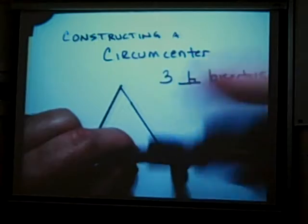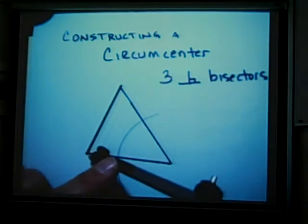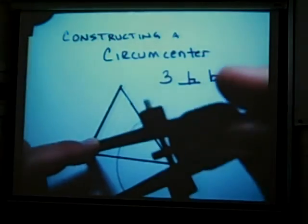Begin by constructing perpendicular bisectors, which are simply more than halfway from each corner. More than halfway from each corner.